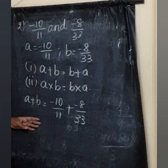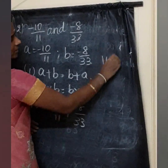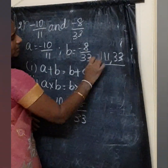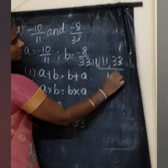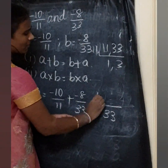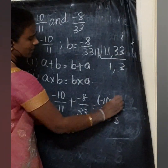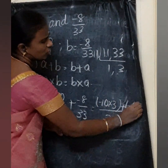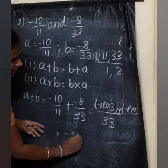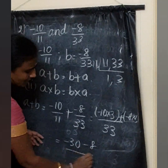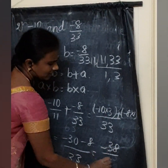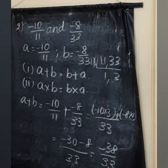The denominators are not the same. Take LCM of 11 and 33, which is 33. So we get minus 10 into 3 plus minus 8 into 1, all over 33. That is minus 30 plus minus 8 equals minus 38 by 33.